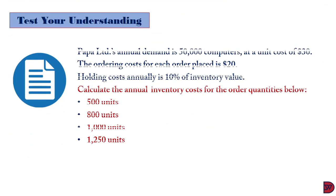Let's test our understanding. Papa Limited's annual demand is 50,000 computers at a unit cost of $30. The ordering cost for each order placed is $20. Holding cost annually is 10% of inventory value. We have to calculate the annual inventory cost for the order quantities: 500 computers, 800, 1,000, and 1,250 units.